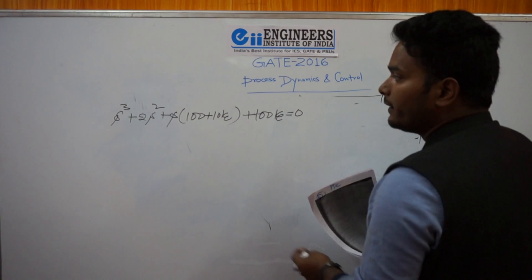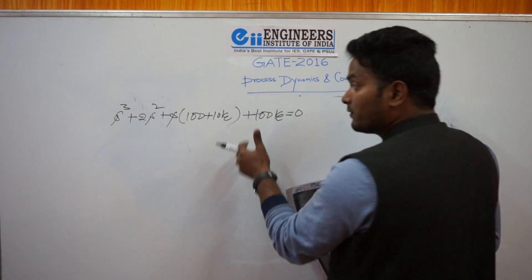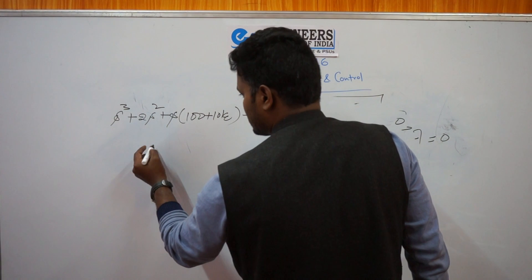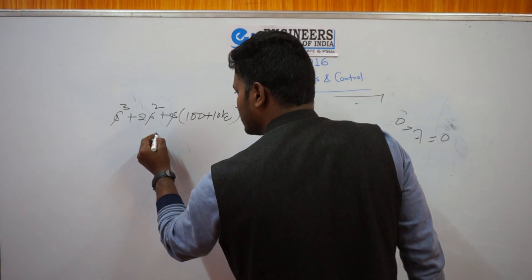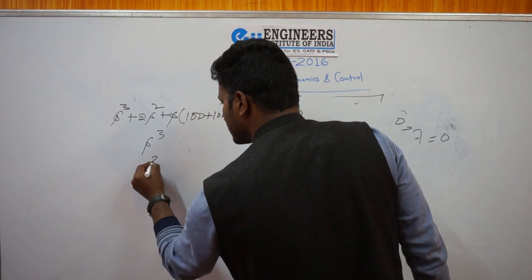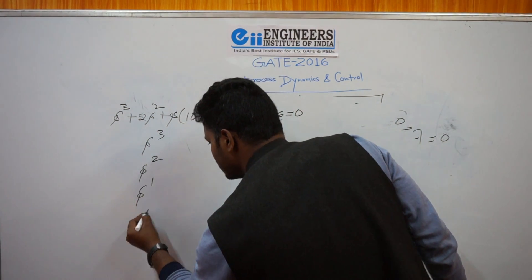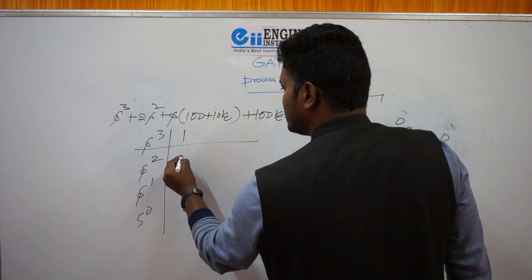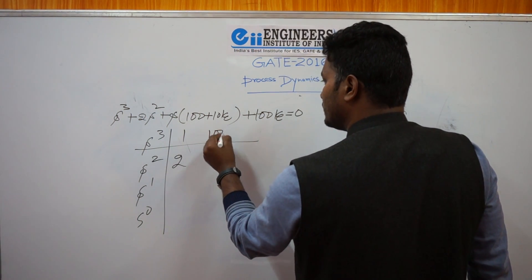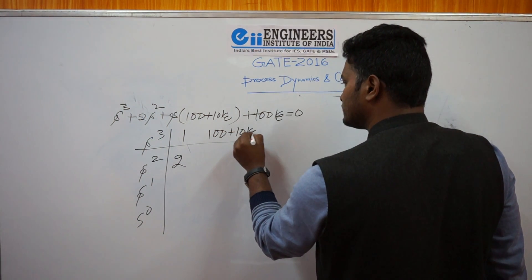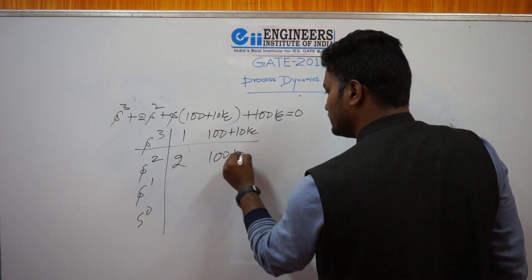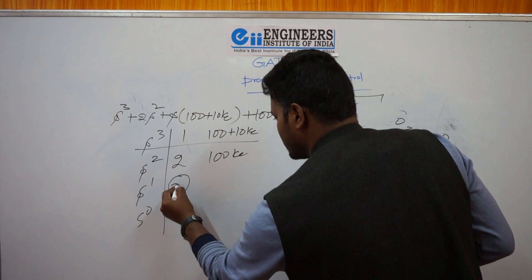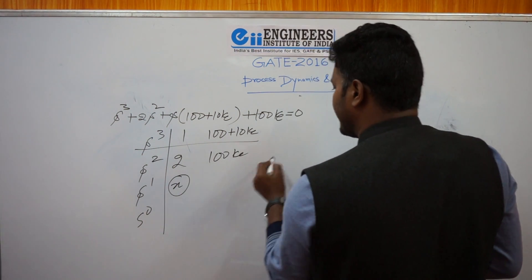Here you have to find the value of Kc for which the system will become critically stable. From the Routh array, plot the rows: s³, s², s¹, s⁰. Put the values: row s³ has 1 and (100 plus 10·Kc); row s² has 2 and 100·Kc.